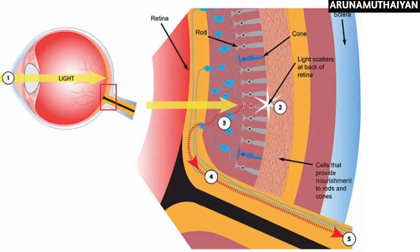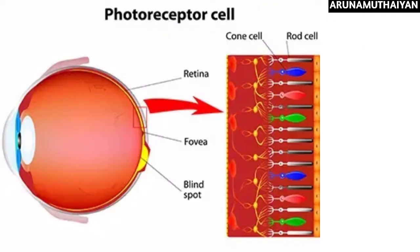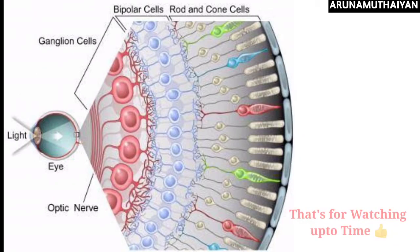The first step of visual transduction involves a colored protein that undergoes conformational changes when it absorbs light. The photo-pigment in rods is called rhodopsin, also known as visual purple. Rod photo-pigment is rhodopsin, and cone photo-pigment is iodopsin.